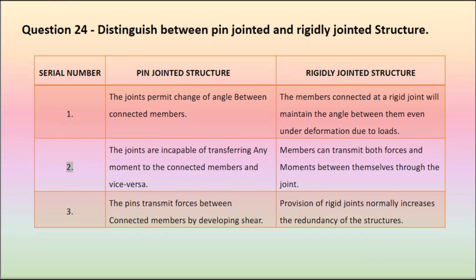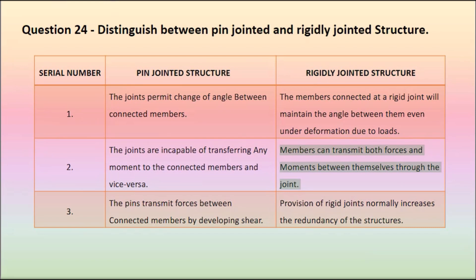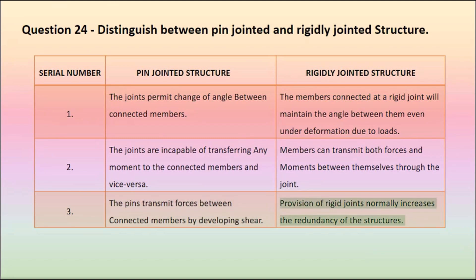2. In pin-jointed structures, the joints are incapable of transferring any moment to the connected members and vice versa. In rigidly-jointed structures, members can transmit both forces and moments between themselves through the joint. 3. The pins transmit forces between connected members by developing shear. Provision of rigid joints normally increases the redundancy of the structures.